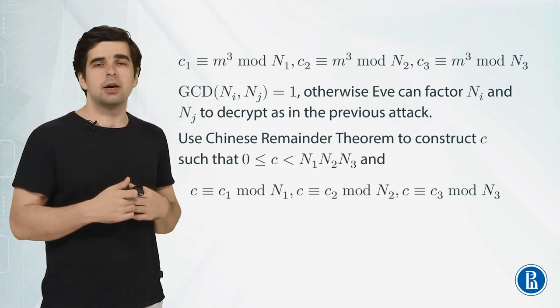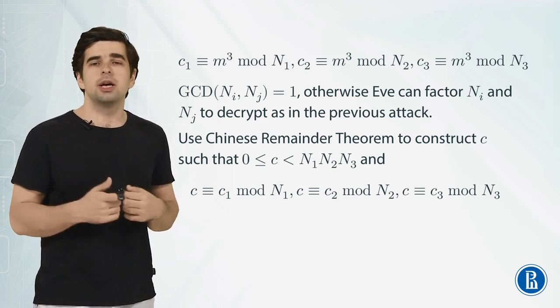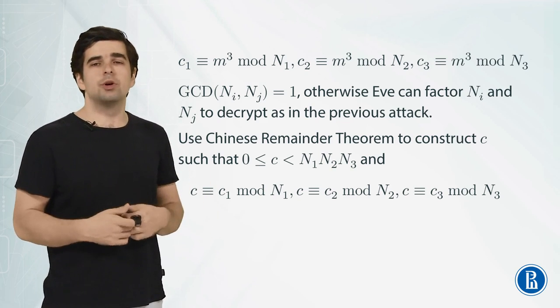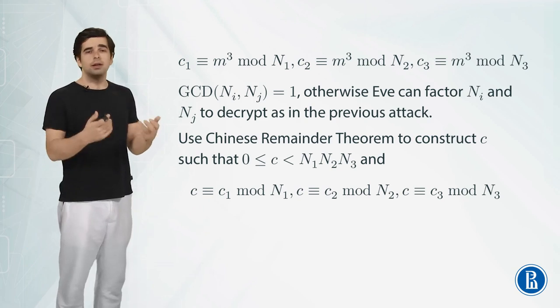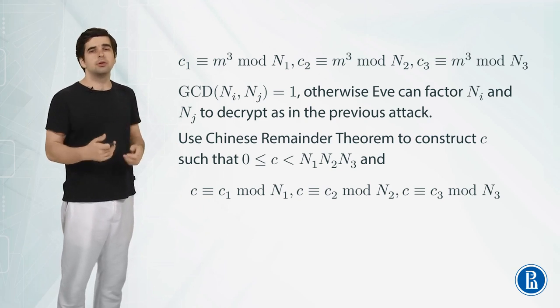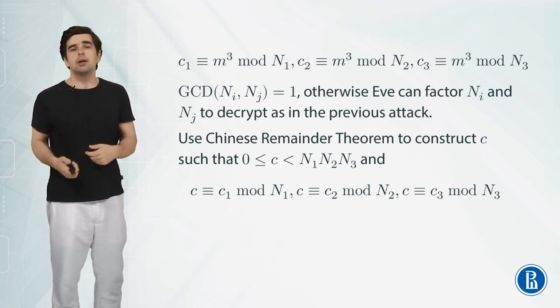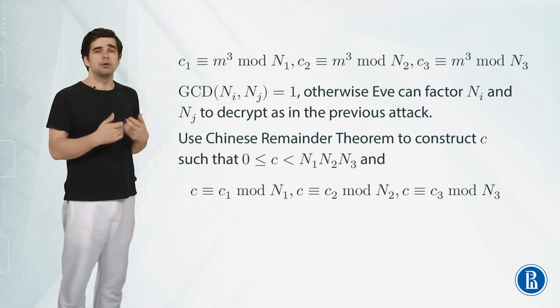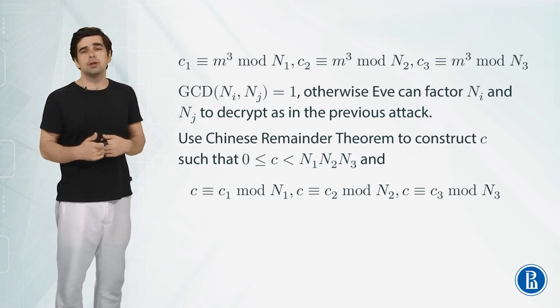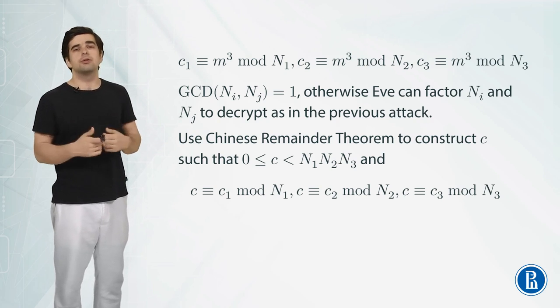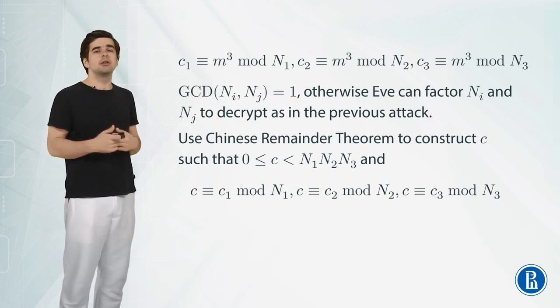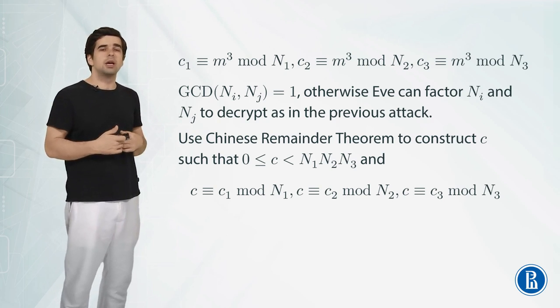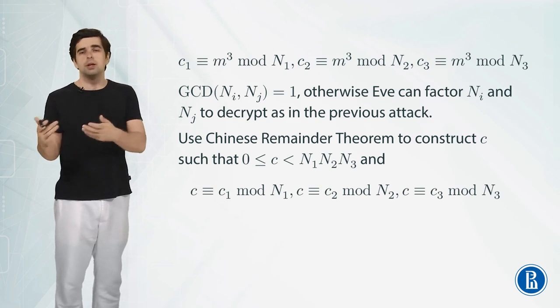So you first construct the number with the required remainders modulo N₁ and N₂ and you get some remainder modulo N₁ times N₂ and then using the fact that N₁ and N₂ is coprime with N₃ you construct another number which has the required remainder modulo N₁ times N₂ and the required remainder c₃ modulo N₃ and in the end you get a remainder modulo N₁N₂N₃ which has required remainders modulo N₁, N₂ and N₃.